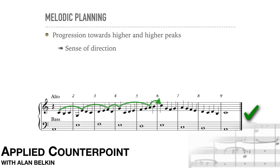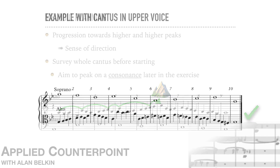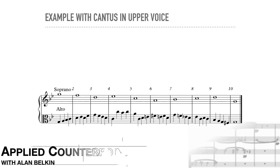In general, it's a good idea to survey the whole cantus before starting to write the added part. The survey should set a goal for the peak of the added line. That makes it easier to gradually work one's way to and from that goal, combining direct and indirect routes for variety. Here's another example, this time with the decantus on top.